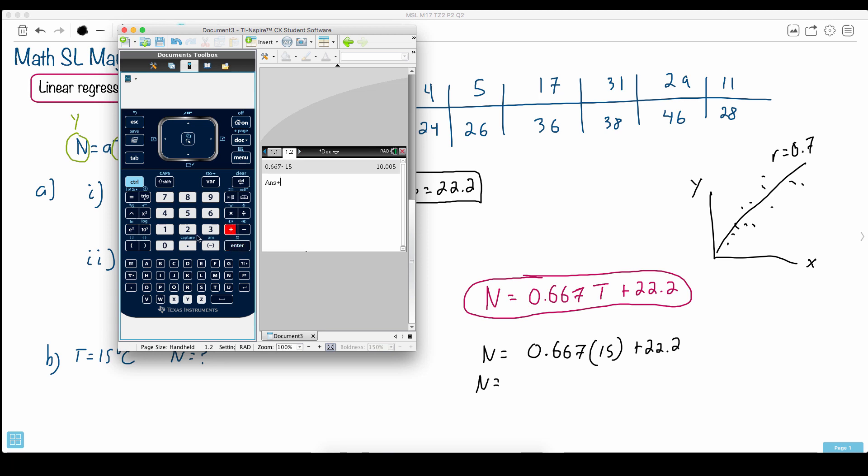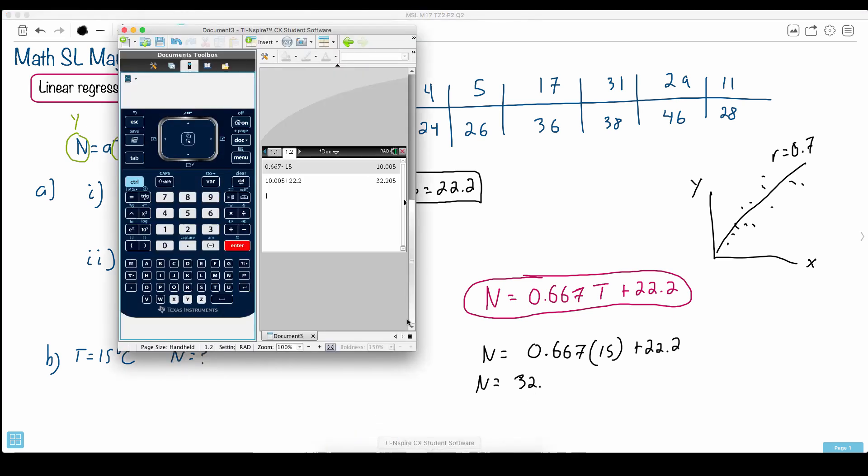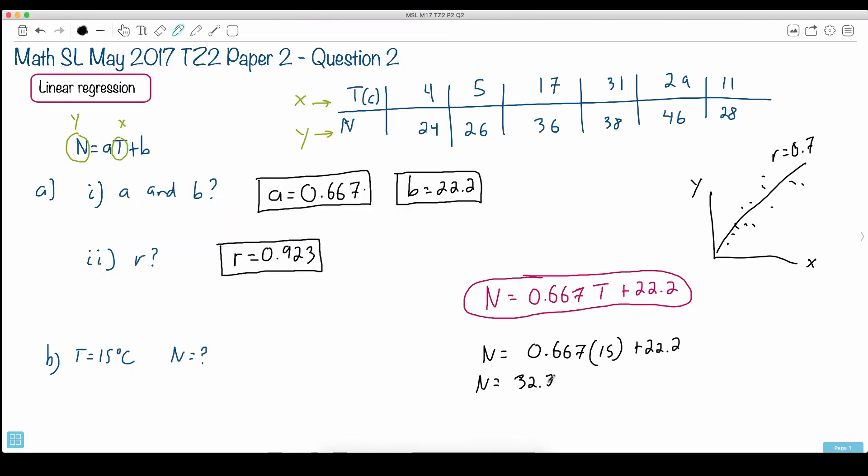And I like to always press enter and then just answer plus this. There it goes. So it's 32.205, which ends up, now you have to think very carefully now. If you just put in this, what was it again? 32.205.